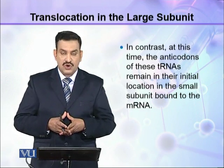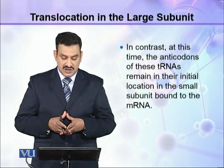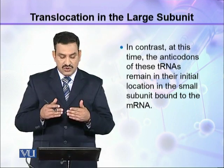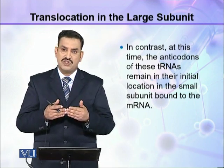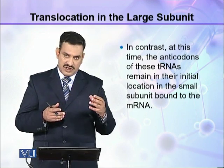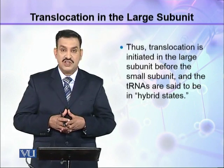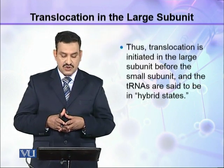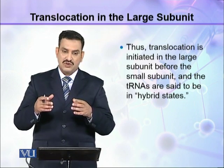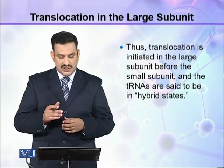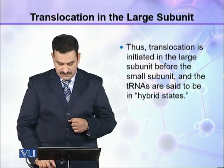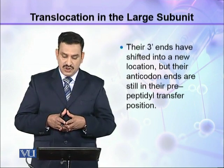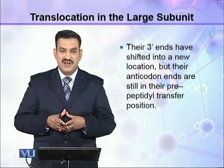In contrast, at this time, the anticodons of these tRNAs remain in their initial location in the small subunit, bound to the mRNA. Thus, translocation is initiated in the large subunit before the small subunit, and the tRNAs are said to be in a hybrid state — their 3' ends have shifted into a new location, but their anticodon ends are still in their pre-peptidyl transferase position.